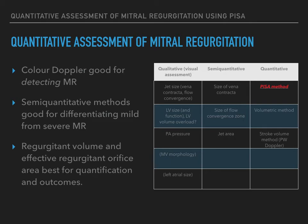As the table shows, there are three methods for the quantitative assessment of regurgitant lesions. We'll start firstly with proximal isovelocity surface area, or PISA.